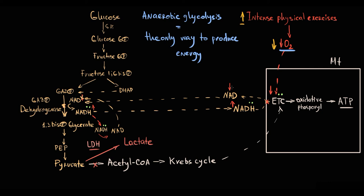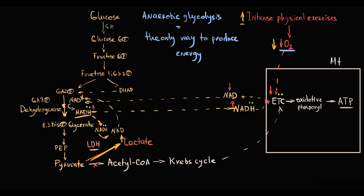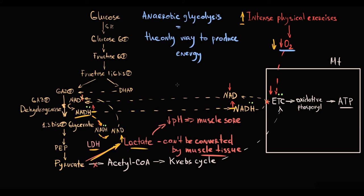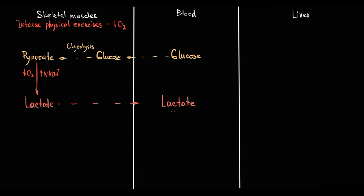Obviously, the more intense the physical exercises, the lower the concentration of oxygen in muscle tissue, the higher the amount of NADH, and so the higher the lactate production. The problem is that lactate, or so-called lactic acid, is an acid, and like any acid, lactate decreases pH. In muscle tissue, acidification impairs muscle contractions and manifests as muscle soreness. Also important, muscle tissue without sufficient oxygen cannot do anything with lactate, so lactate is released from muscle tissue into the circulation. Lactate concentration in the blood must be strictly controlled, because lactate decreases blood pH, and accumulation of lactate in the blood is very dangerous.